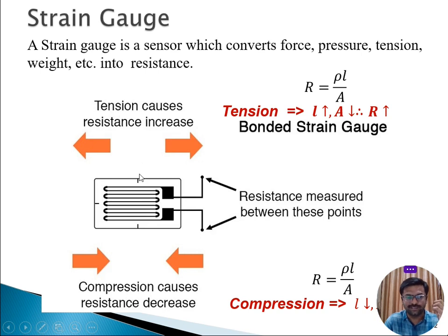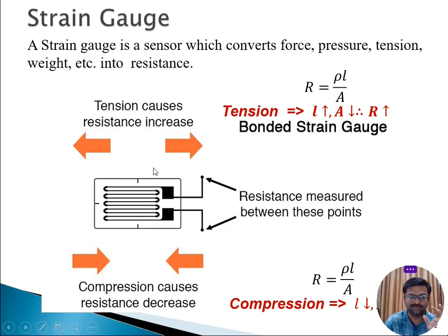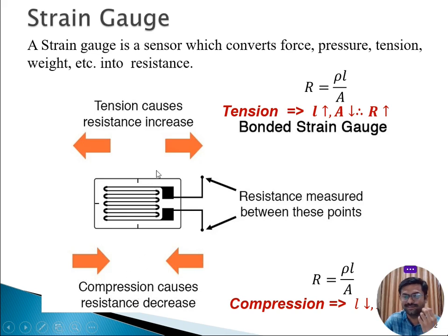If tension is experienced by the strain gauge, that will cause an increase in resistance. And the compression experienced by the same strain gauge will cause a decrease in the resistance. Now we will see how tension causes an increase in resistance.